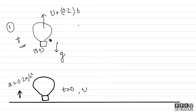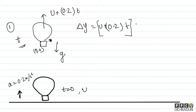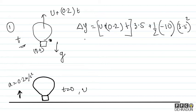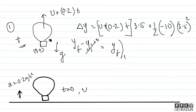पत्थर का displacement कितना होगा: Δy = u×t + ½×a×t², जहाँ initial velocity u है, time 3.5 seconds है, और acceleration −10 m/s² है। तो Δy = u×3.5 + ½×(−10)×(3.5)²। और Δy = y_final − y_initial, लेकिन y_initial = 0, इसलिए y_final ही पत्थर नंबर 1 की location है 3.5 seconds बाद।